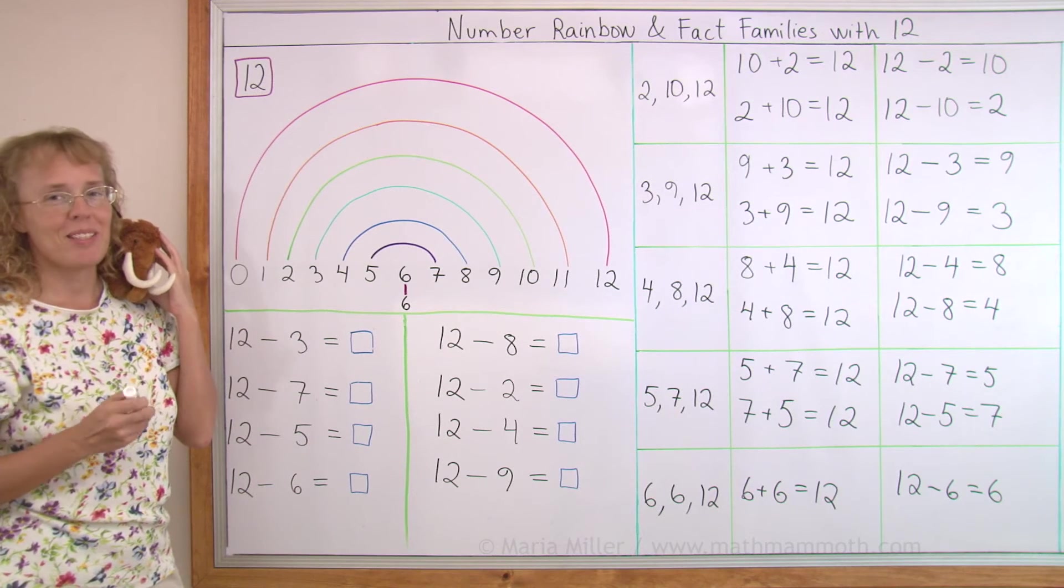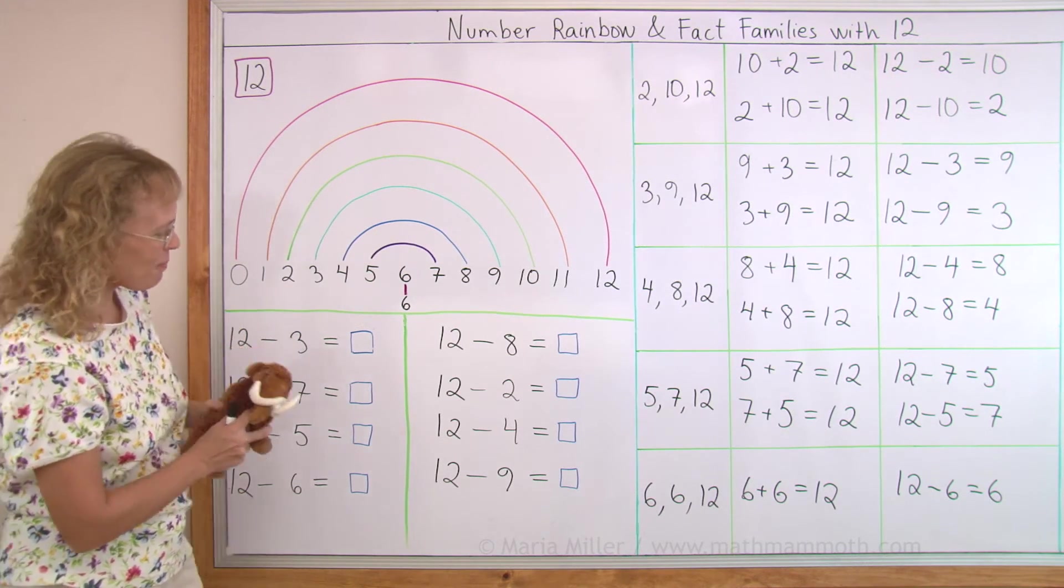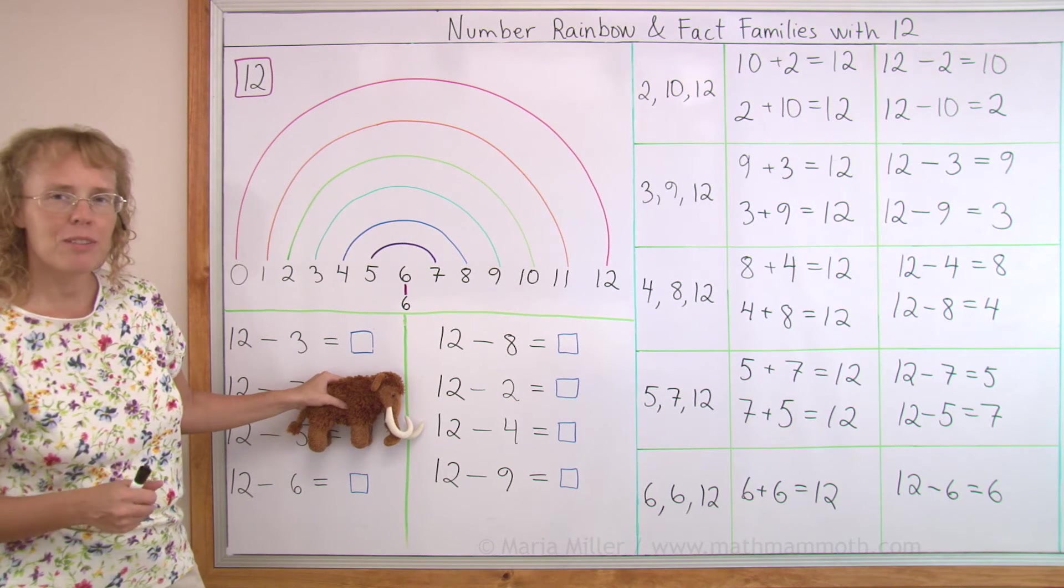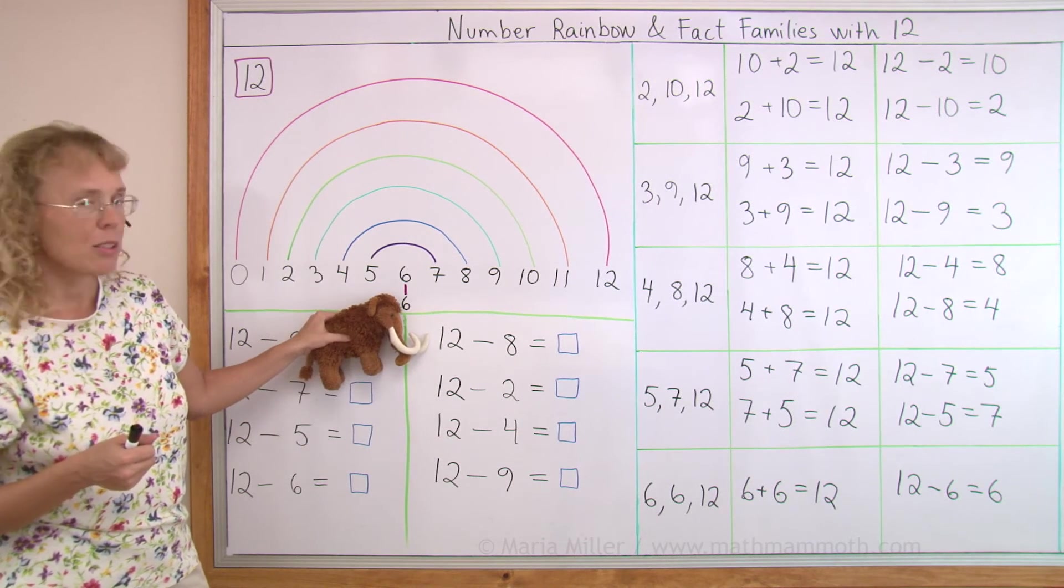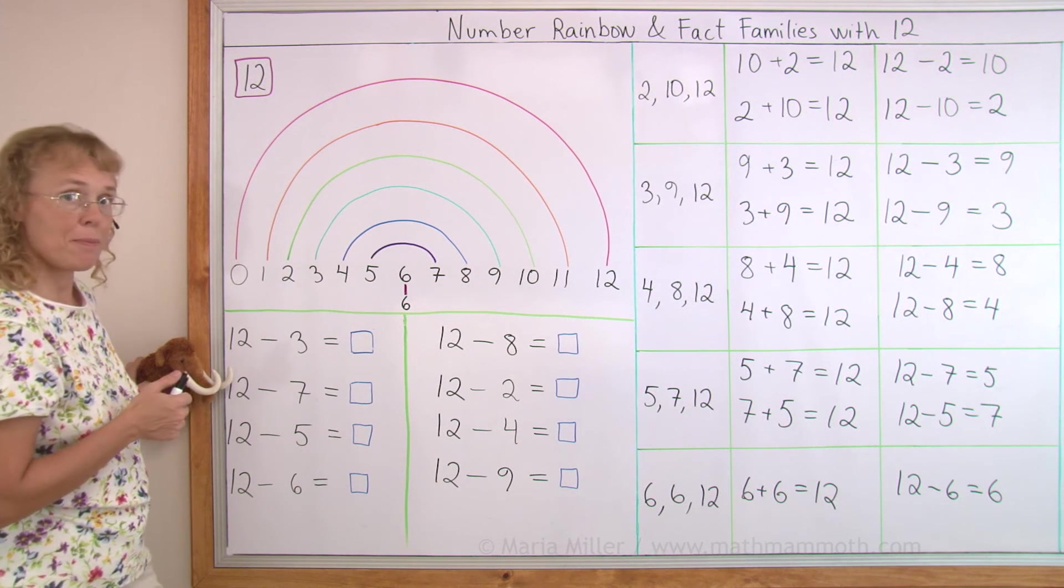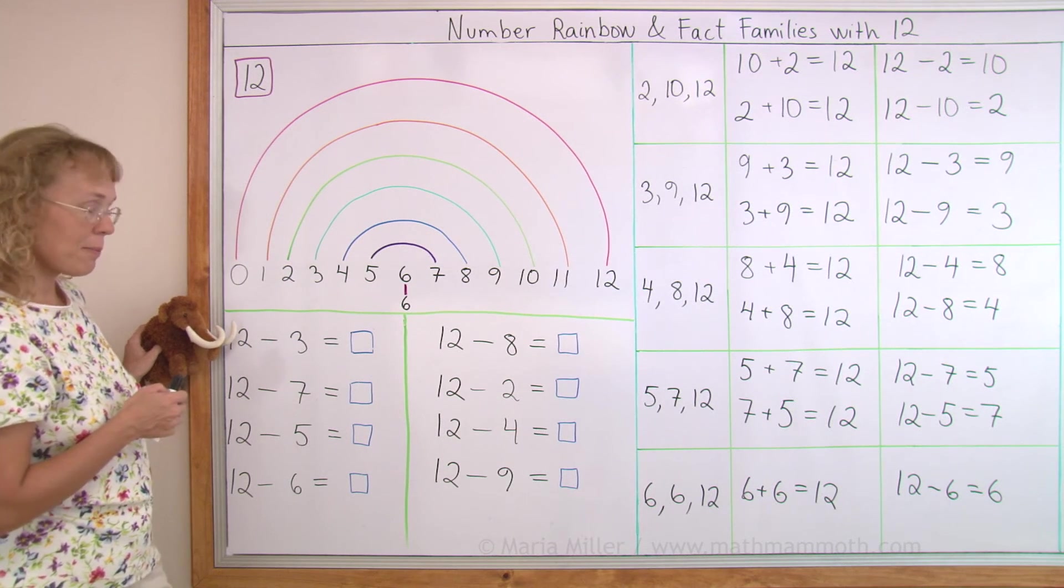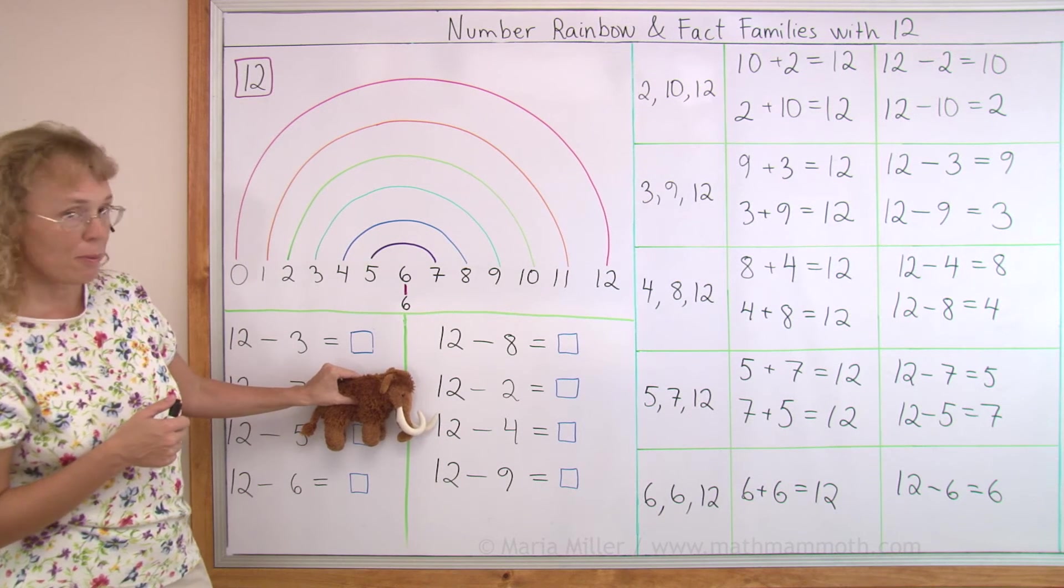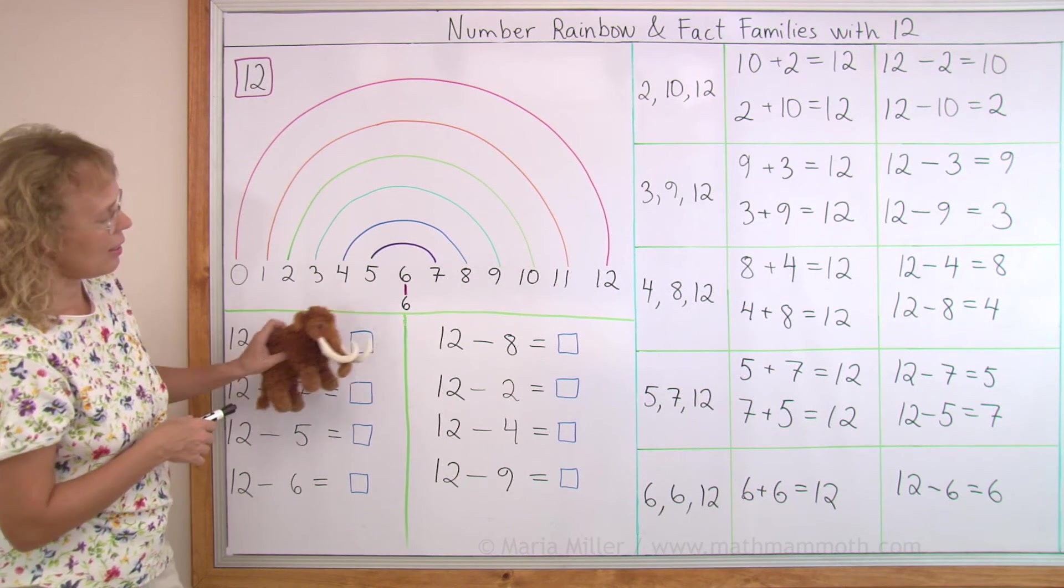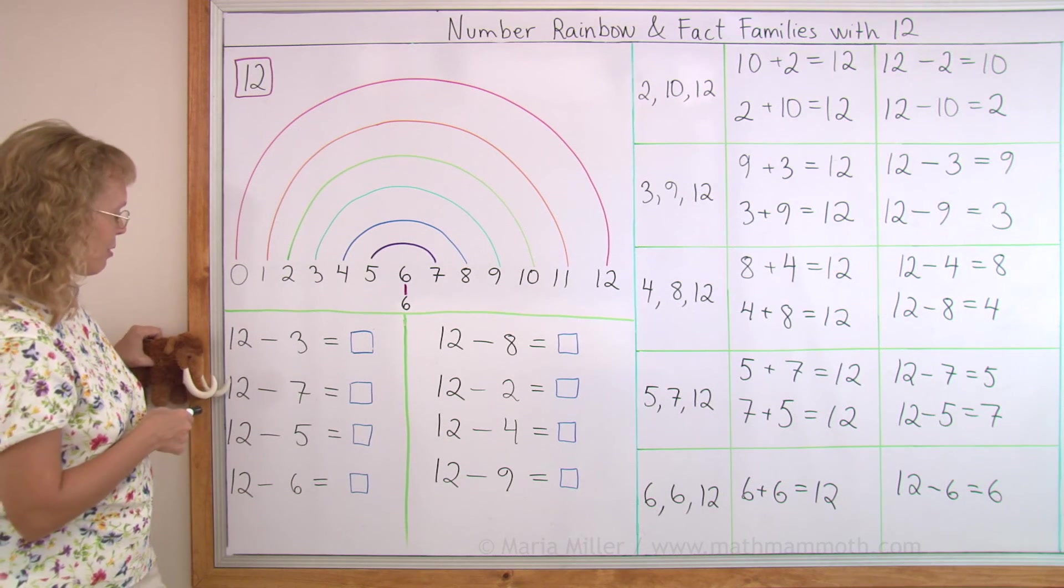But we're going to try it one more time. Faster. Can you do it? Okay, Mathie, just be fast. 12 minus 9. 12 minus 2. 12 minus 4. 12 minus 8. 12 minus 6. 12 minus 7. 12 minus 5. 12 minus 3. 12 minus 4. 12 minus 5. 12 minus 8. 12 minus 9. 12 minus 7.